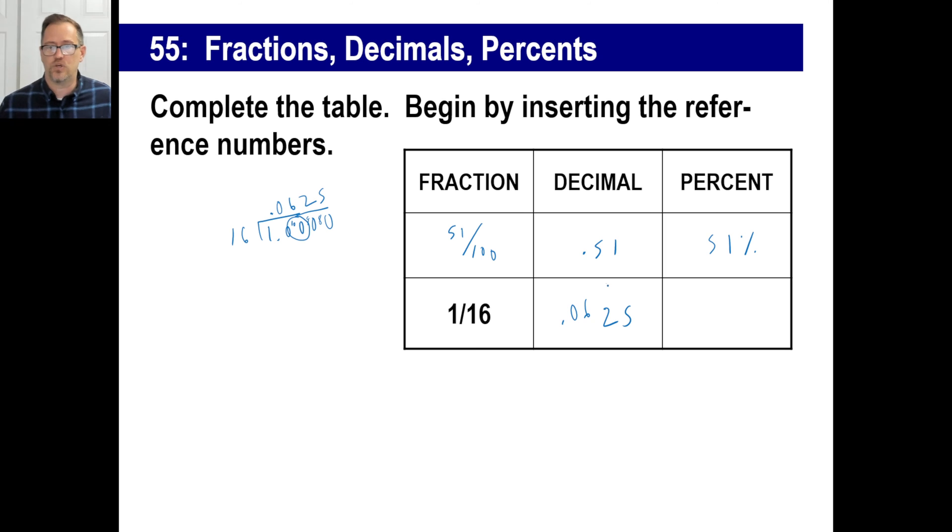I probably did that a lot faster than you would, but no big deal. But this part, you should be able to go. Once you find that decimal, what do you need to do? What did you do to this 0.51 to make—to say that's 51%? You just moved it over to the right twice, right? So you move this over to the right as well. 0.0625, move it over. That is 6.25%. There you go. That's all there is to it.